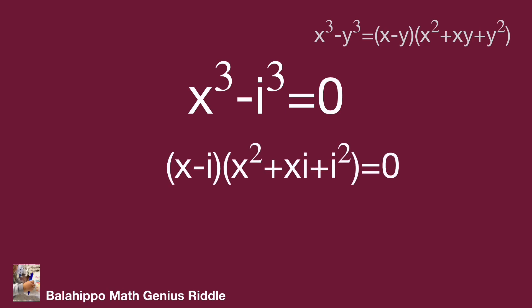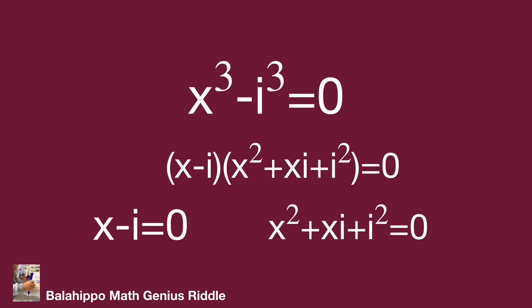x cubed minus i cubed equals (x - i)(x² + xi + i²) equals 0. So x minus i equals 0 or x² + xi + i² equals 0.